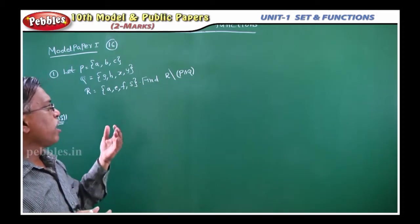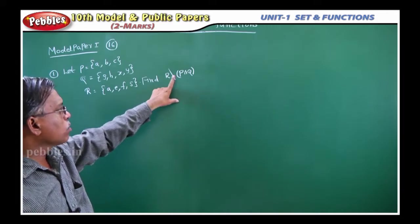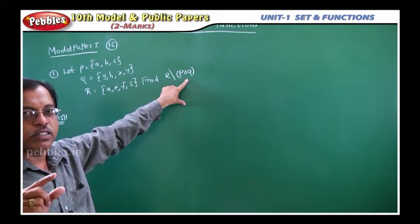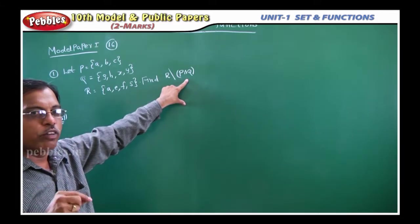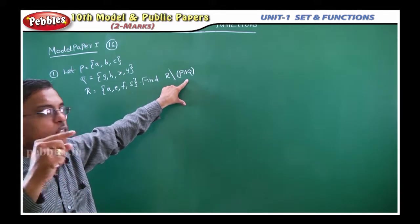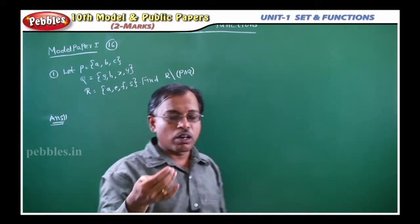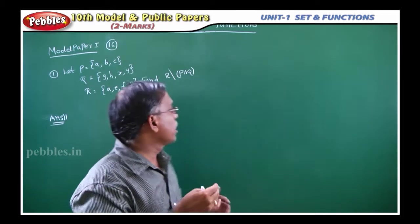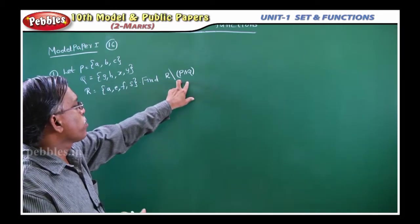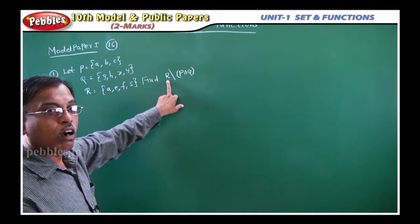That means what? The elements which are present in R but not in P intersection Q, you have to find out. In general, A slash B means the elements which are present in A but not in B.